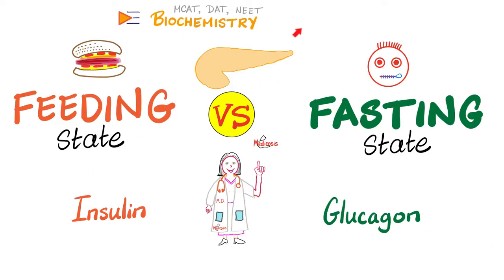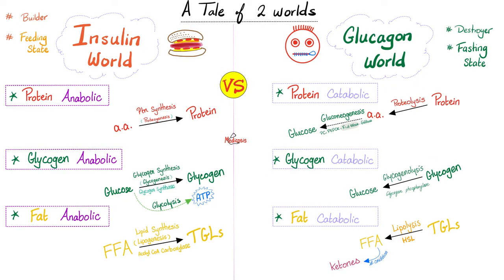One of the most important things that will help you understand metabolism is to ask yourself every time: am I in the insulin world or the glucagon world? Is it the feeding state or the fasting state? In the feeding state, I am anabolic — I want to build up proteins from amino acids, glycogen from glucose, and triglycerides from free fatty acids. Conversely, when fasting, it's the glucagon world: break down proteins into amino acids, glycogen into glucose, and triglycerides into free fatty acids. Ketone bodies appear in the glucagon world, not in the insulin world.